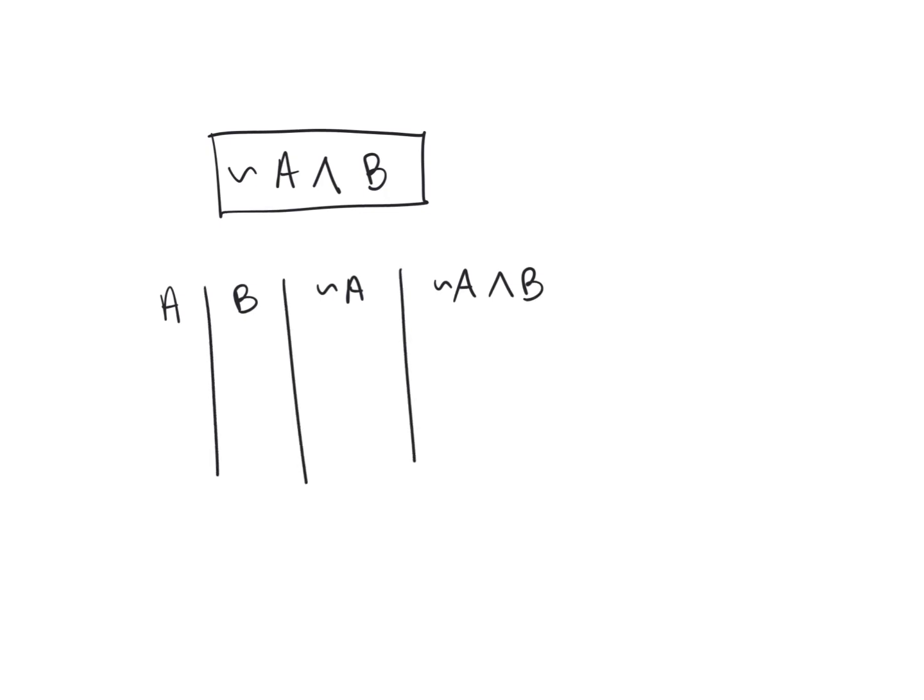The way that we always do our truth tables when we have two statements, we kind of even that out: true true, false false, true false, true false. Those are all the options and ways that A and B could be put together. Not A is a negation of A, which means all the opposite truth values.